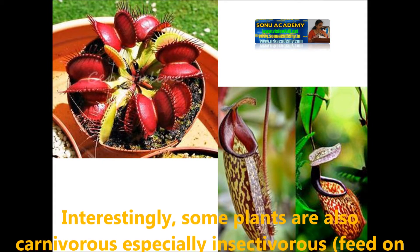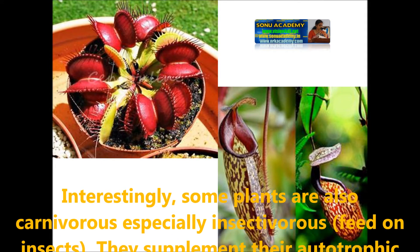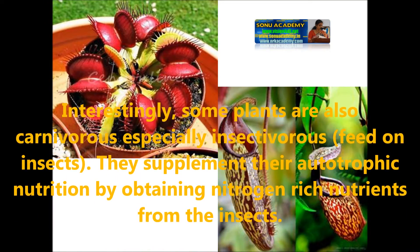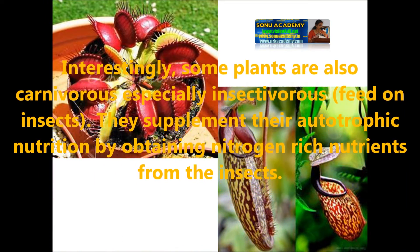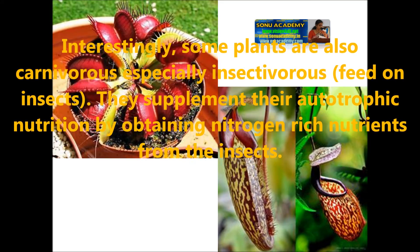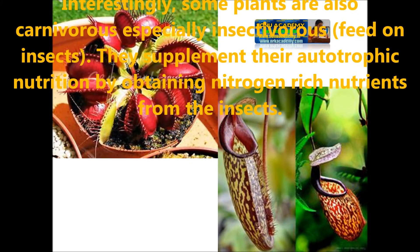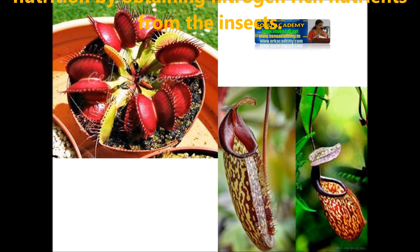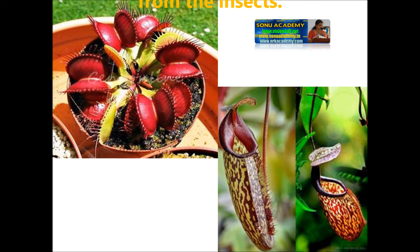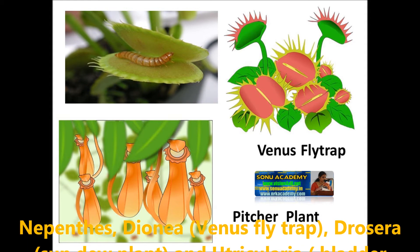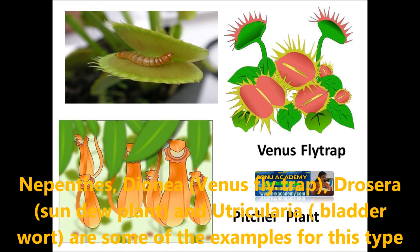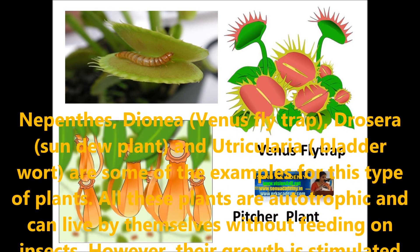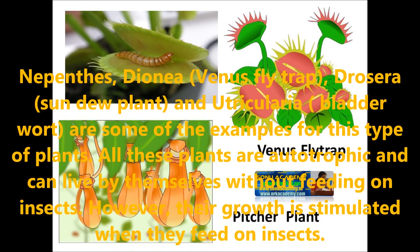Interestingly, some plants are also carnivores — especially insectivores, which feed on insects. The supplement of their nutrition is autotrophic, and they obtain nitrogen-rich nutrients from the insects. Examples are Venus flytrap, sundew plant, and bladderwort.